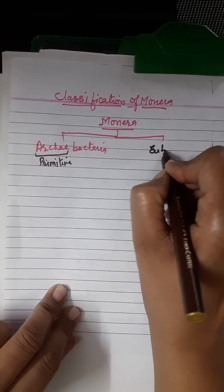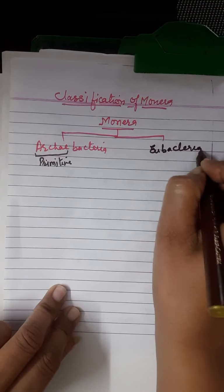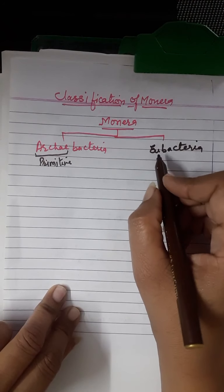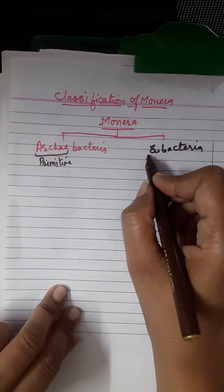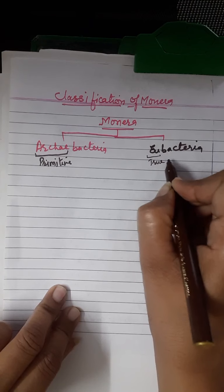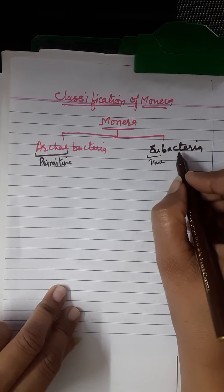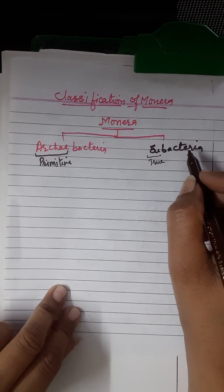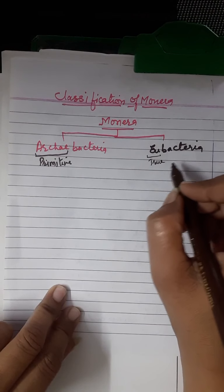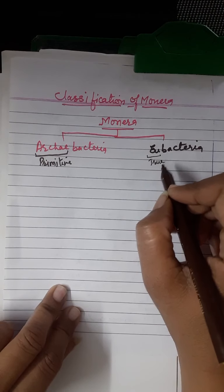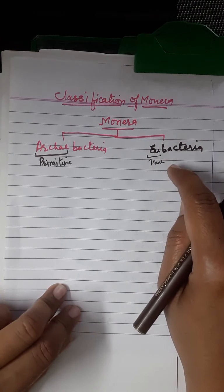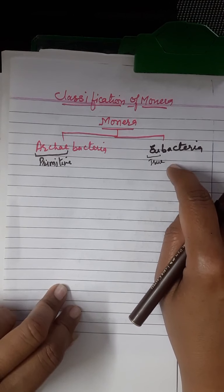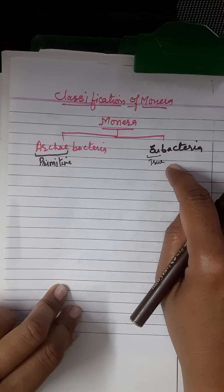The second type is Eubacteria. In biology, the prefix 'eu' means true — like eukaryotic, euchromatin. So Eubacteria means true bacteria, which have a true nucleus bounded by a double unit membrane, fulfilling all characteristics of bacteria.